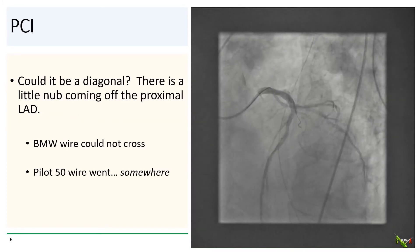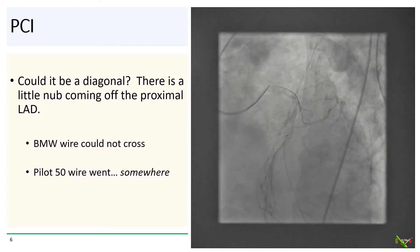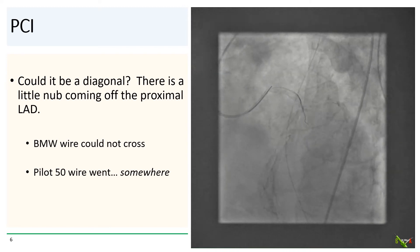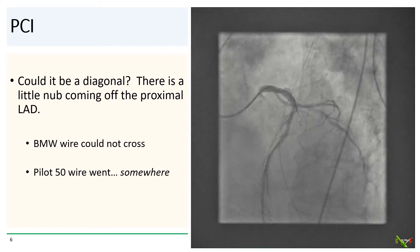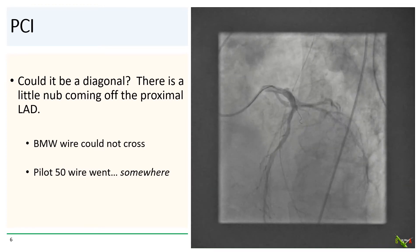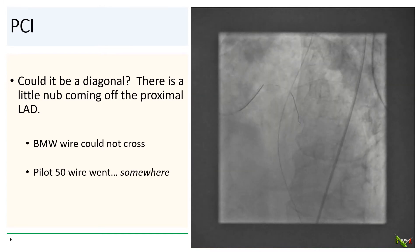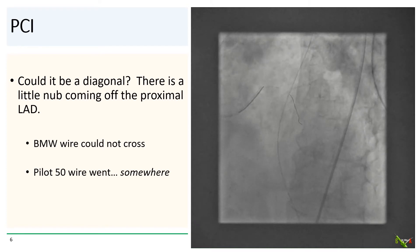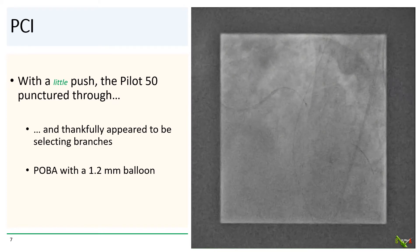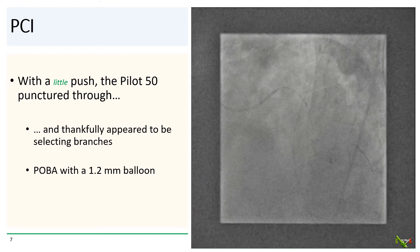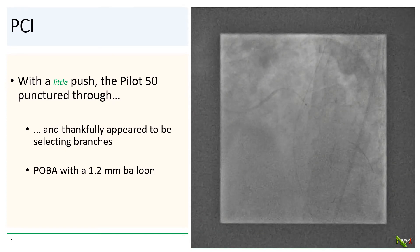Could the culprit be a diagonal branch? There is an unimpressive little nub coming off of the proximal LAD. We decided to go after it. We stuck a BMW wire down there, but it just curled up against the nub and made no progress. We then tried a hydrophilic Pilot 50 wire, which went through the nub, but it was not really clear where it was tracking. With a little bit of a push, the Pilot 50 wire popped through and thankfully appeared to be selecting branches.